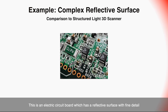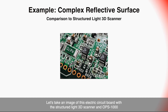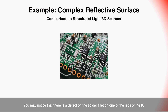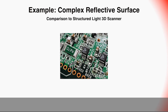This is an electric circuit board which has a reflective surface with fine detail. Let's take an image of this electric circuit board with the structured light 3D scanner and the OPS-1000. You may notice there is a defect on the solder fillet on one of the legs of the IC.